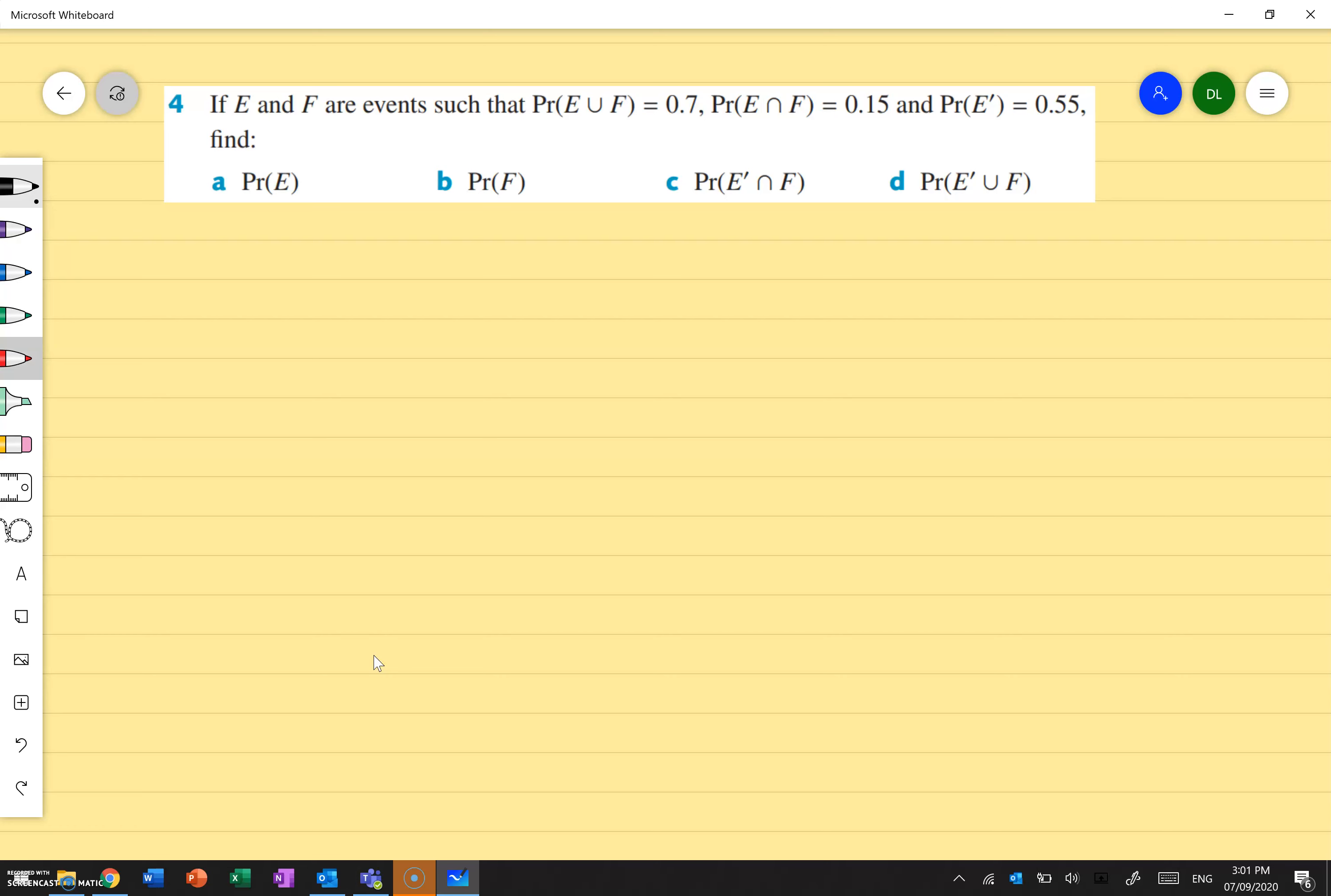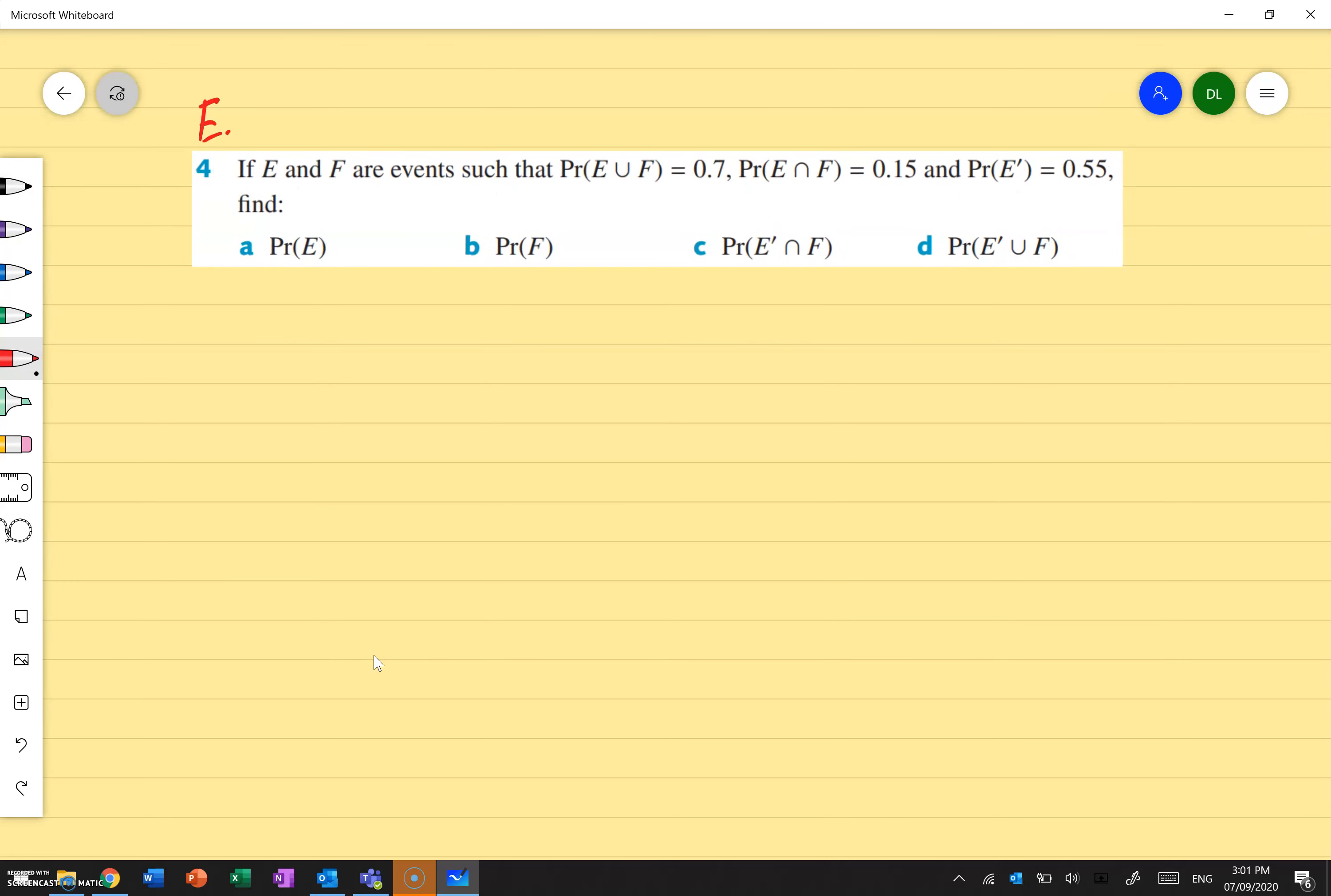So this is question four of exercise 9E of your textbook. So exercise 9E, question four, and I'm going to go through all of question four. It's the same idea in terms of just making the Karnaugh map and then filling in the gaps from there. It's kind of like a Sudoku, just like what I was saying before.